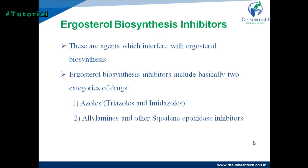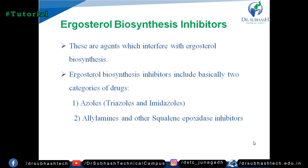Ergosterol biosynthesis inhibitors include basically two categories of drugs: azoles, and allylamines and other squalene epoxidase inhibitors. Drug examples of this class we have already discussed during the classification.